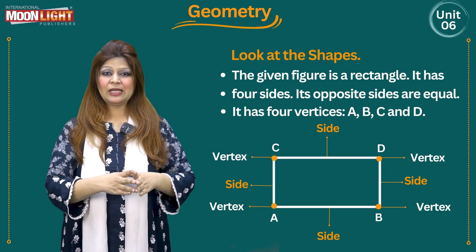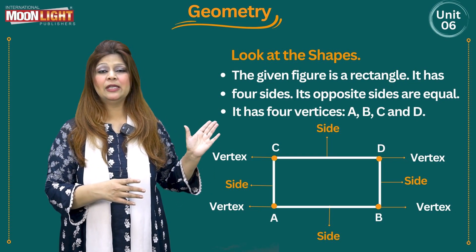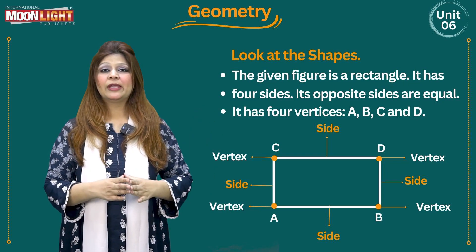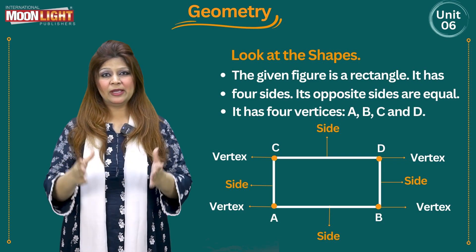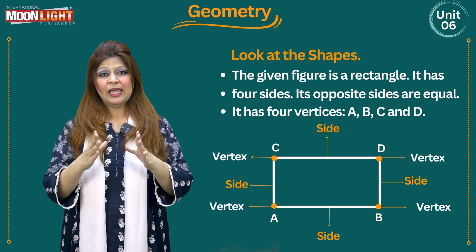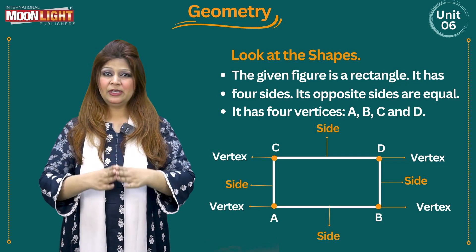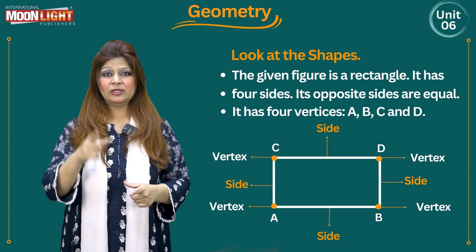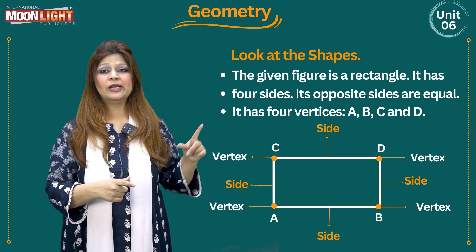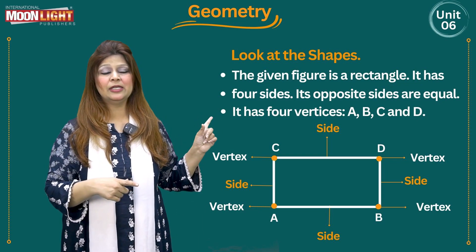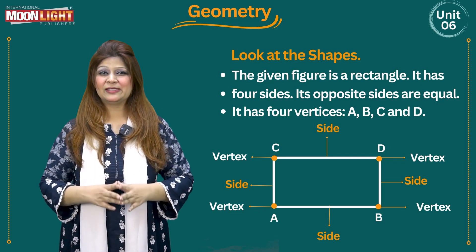So here I have mentioned A, B, C, D — capital A, capital B, capital C and D. These all are vertices. And if I am going to talk about a single one, for example this D — this D is a vertex.